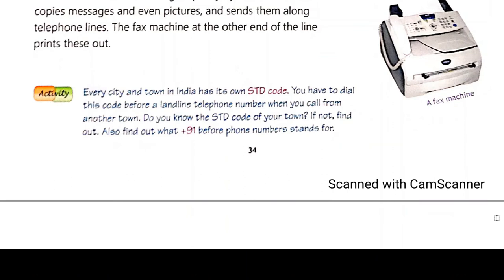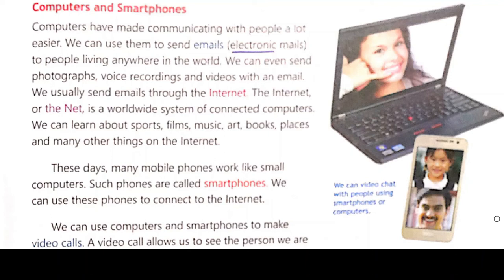Then we will discuss about computers and smartphones. Computers have made communicating with people a lot easier. We can use them to send emails — that is, electronic mails — to people living anywhere in the world. We can even send photographs, voice recordings, and videos with an email. We usually send emails through the internet. The internet, or the net, is a worldwide system of connected computers. We can learn about sports, films, music, art, books, places, and many other things on the internet.